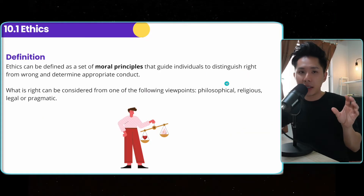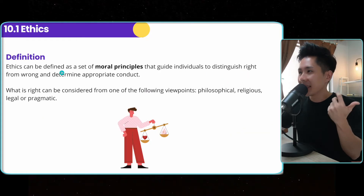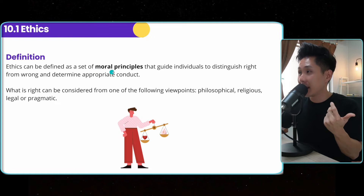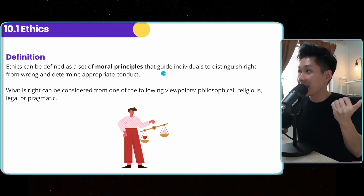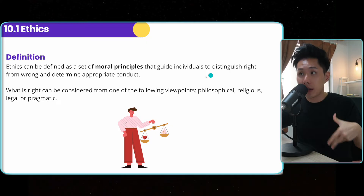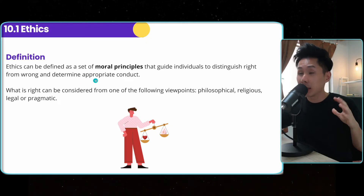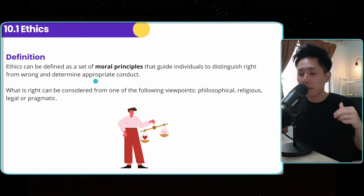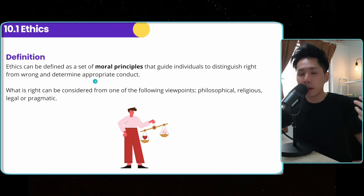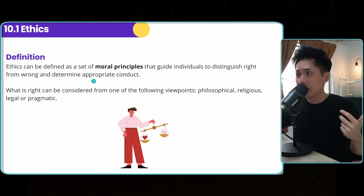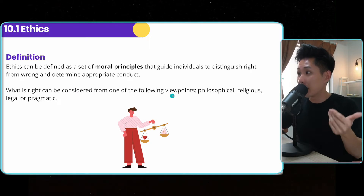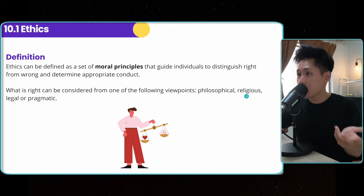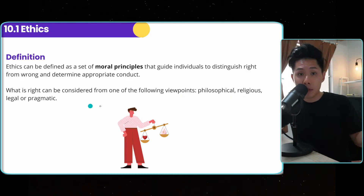So let's first define what ethics is. Ethics can be defined as a set of moral principles that guides us to distinguish right from wrong and determine appropriate conduct. For different people, the line between right and wrong can be very different. So what is right can be considered from one of the following viewpoints: philosophical, religious, legal, or pragmatic.